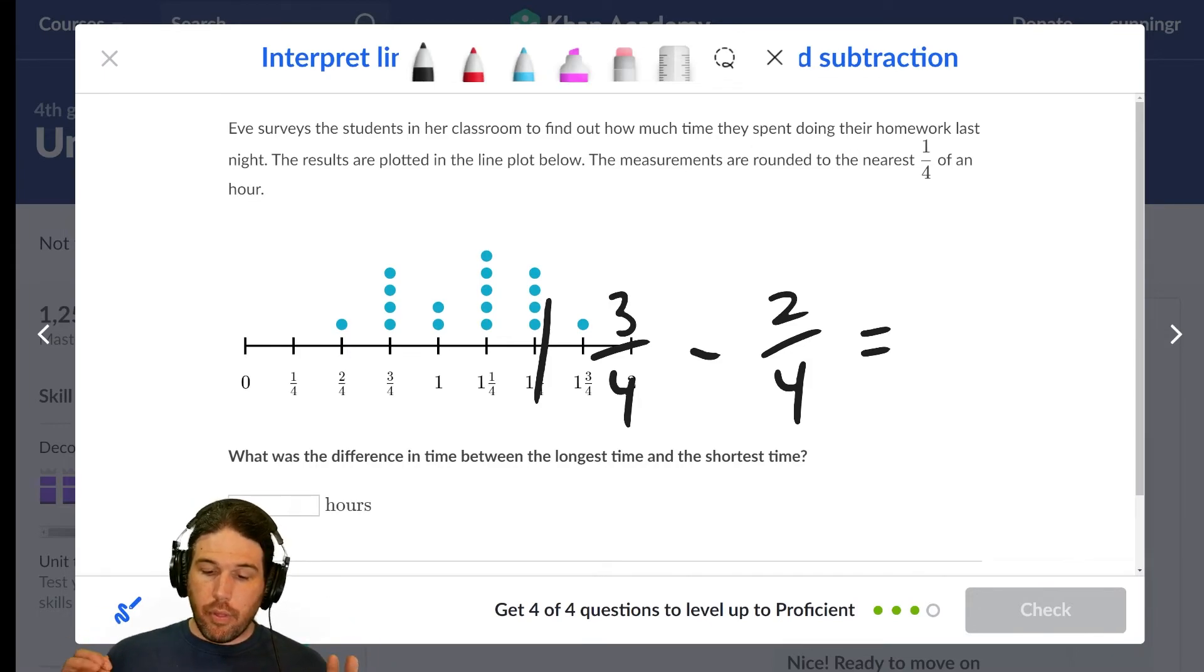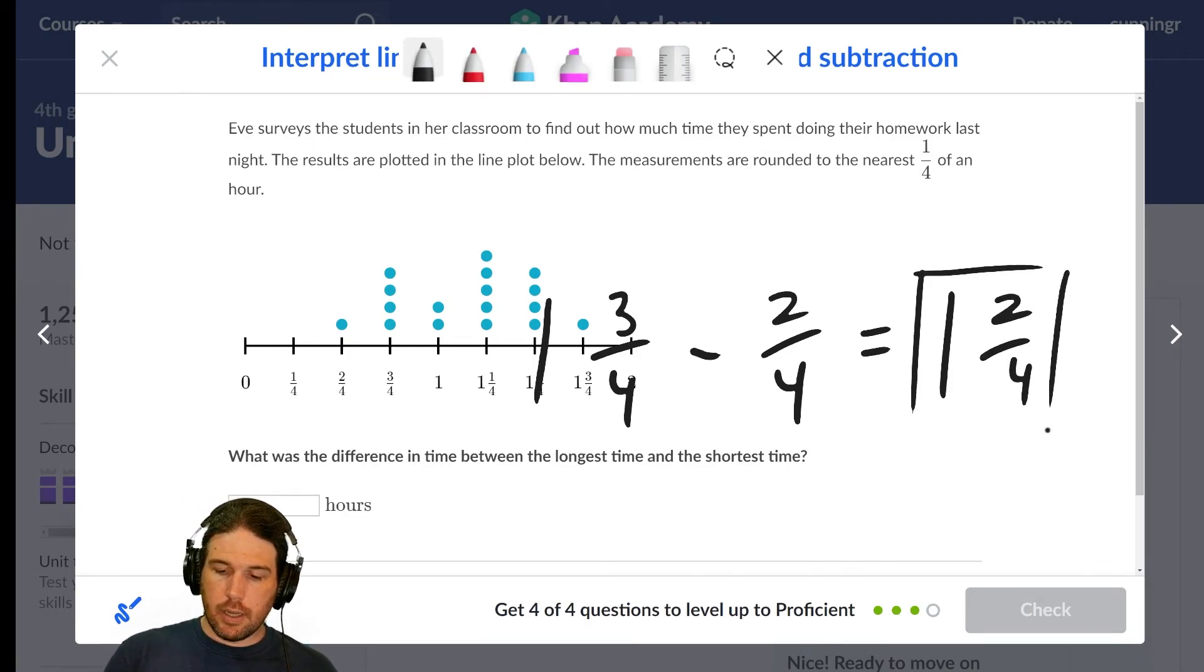Anyway, I don't see a whole number here. That doesn't mean it's not there. There is a whole number there. It's just a zero. So we get one, three over four minus two over four. If I have three-fourths and I take one of them away, I have two-fourths left. My final answer, the difference between the two is one and two-fourths hours.